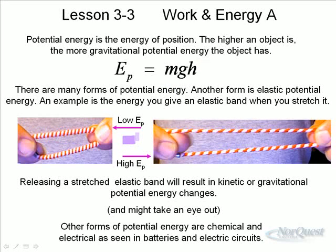Other forms of potential energy are chemical and electrical. If you have a flashlight with a battery in it, inside that battery is stored chemical potential energy. When you turn on the switch, that potential energy turns into another form of energy, such as light and possibly a little bit of heat. Mostly in Physics 20 we worry about gravitational, and occasionally elastic, but we don't deal with chemical or electrical in this course.